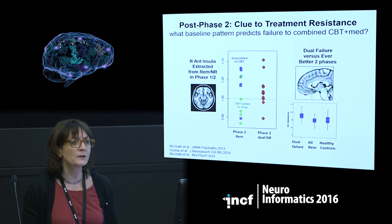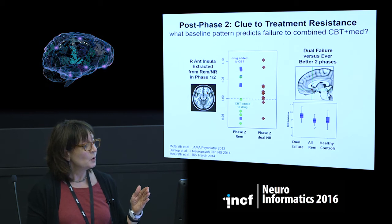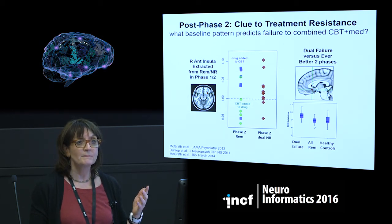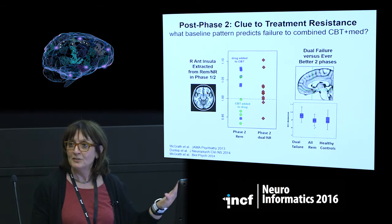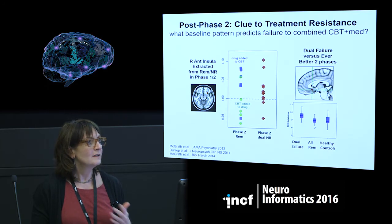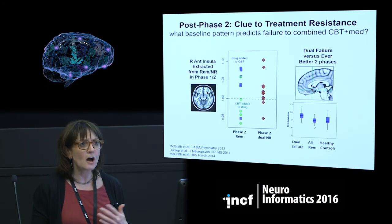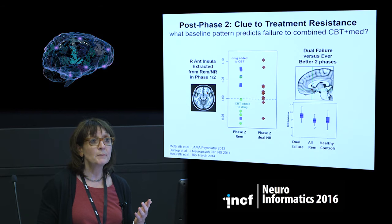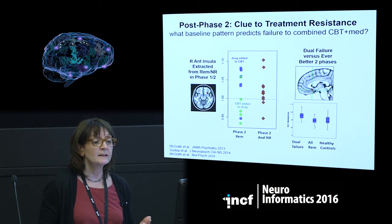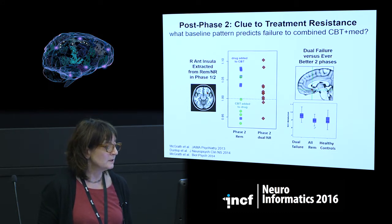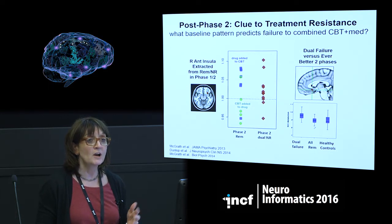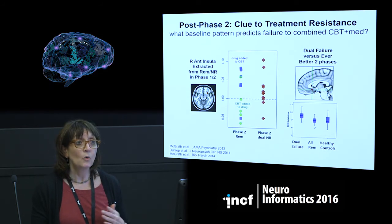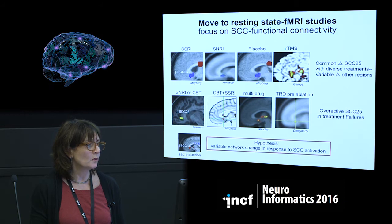We also learned that some patients didn't get better even on both treatments. What characterized them? They tended to be the drug type — not a big surprise. Once you've eliminated sending someone to a therapist, you get to the hard work of what drug, or whether they need electroconvulsive shock — a different domain of trouble for a depressed patient. Looking at whether any signal could characterize people who never get better versus those who do, a signal was seen again in the sub-callosal cingulate. Overactivity there was predictive and tracked with high activity in the insula for non-responders.